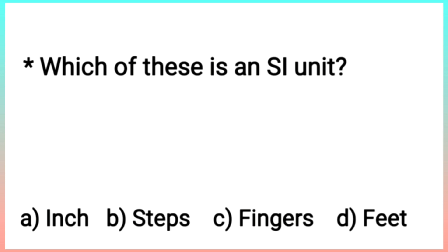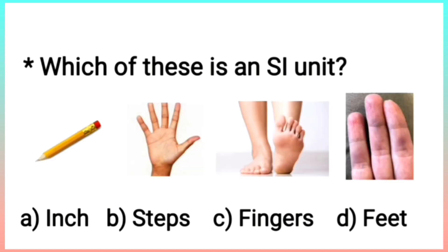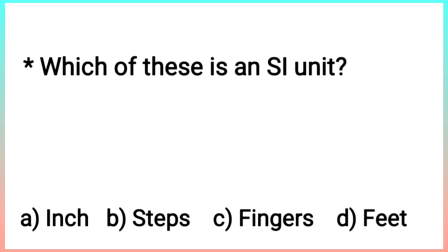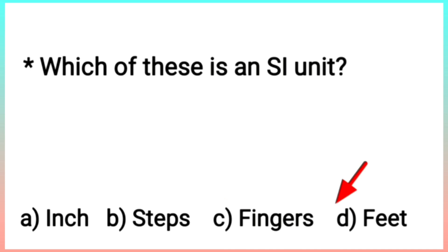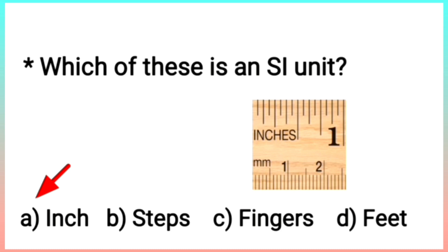Next: which of these is an SI unit? An SI unit is a standard unit that cannot be changed. Sometimes people use non-standardized units like a pencil, handspan, foot span, or fingers, which are not always the same. Option B is steps, C is fingers, and D is feet — these all vary from person to person. But inch remains the same on every scale. So option A is correct.